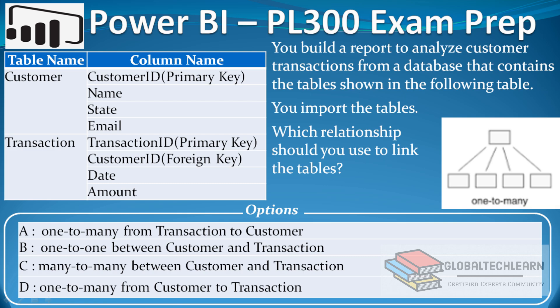The question asks: after you import the tables, which relationship should you use to link them? The options are: A) one-to-many from Transaction to Customer, B) one-to-one between Customer and Transaction, C) many-to-many between Customer and Transaction, and D) one-to-many from Customer to Transaction. Let's check this in Power BI Desktop and validate which relationship we need to define.